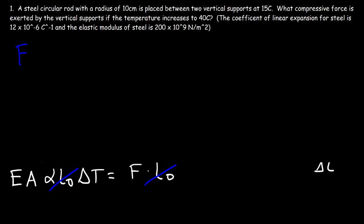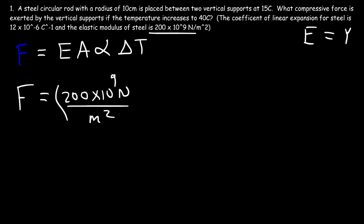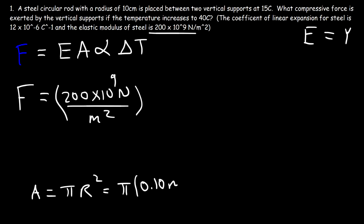The compressive force equals the elastic modulus, or Young's modulus — these are the same. The elastic modulus of steel is 200 times 10 to the 9 newtons per square meter. To calculate the area, we have a circular rod, so the area is pi R squared. That's pi times (0.10 meters) squared, which gives us an area of 0.031416 square meters.